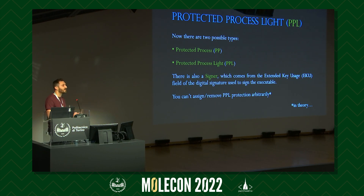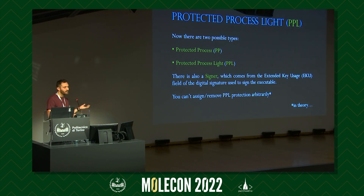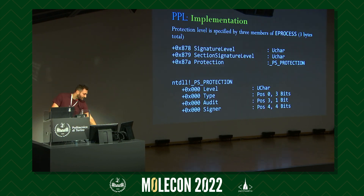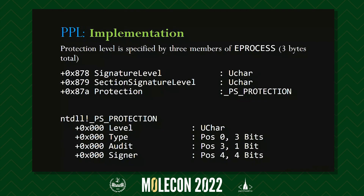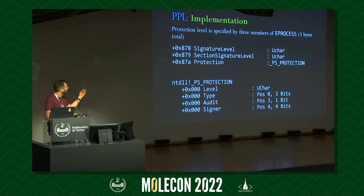With the advent of protected process light, Microsoft introduced the concept of a signer — a piece of information derived from the digital signature used to sign the executable. Microsoft still maintains control over which processes can run as PPL because they must sign the executable. The PPL implementation relies on kernel flags, specifically a three-byte structure present in EPROCESS with three fields: signature level, section signature level, and protection.